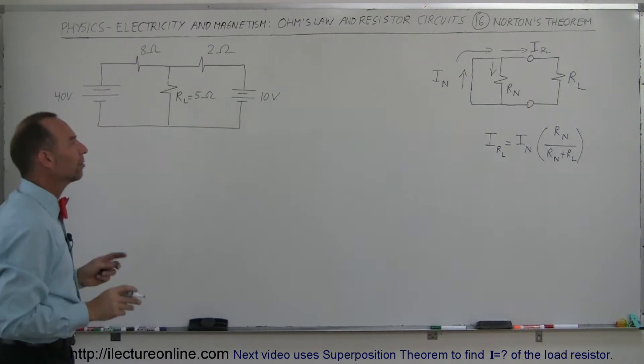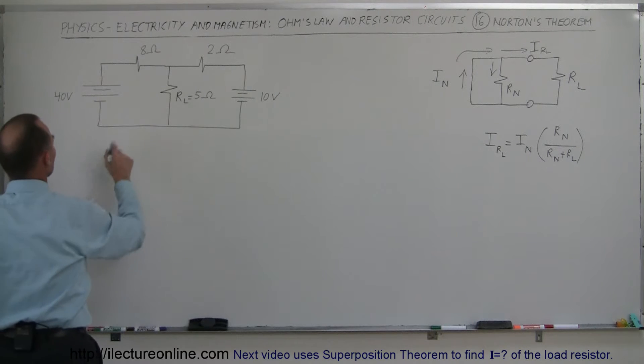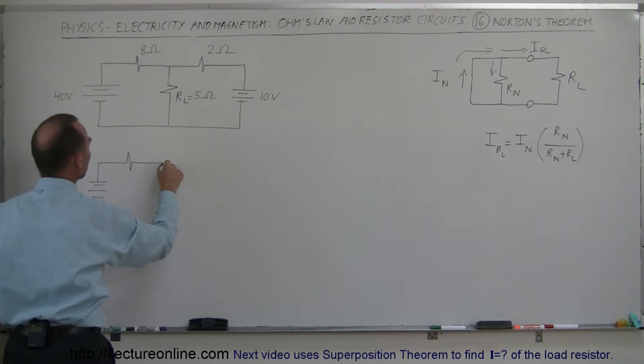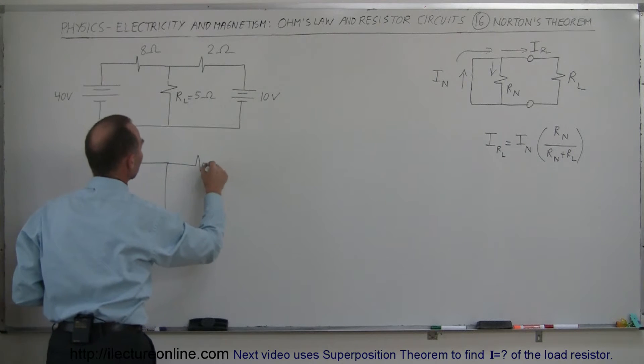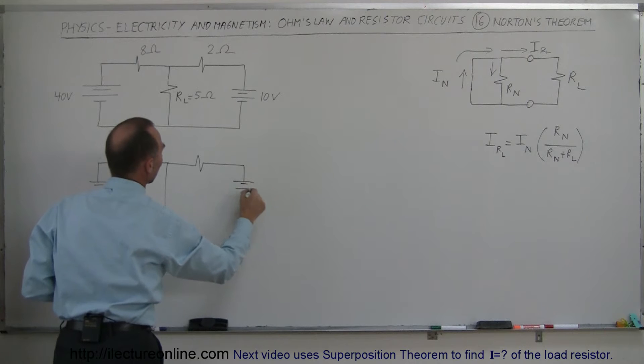And the way we do that is as follows. To find the Norton current, we take the very same circuit that we have here, let's draw it, with one change. The one change is that we're going to short out the load resistor.